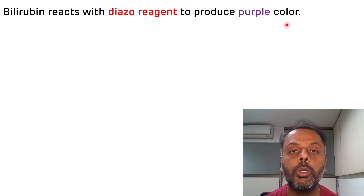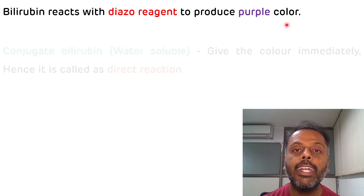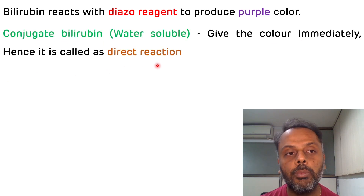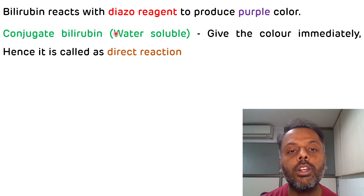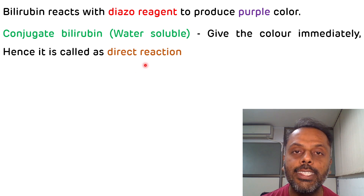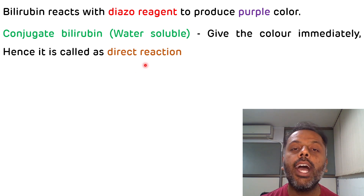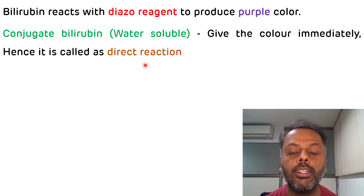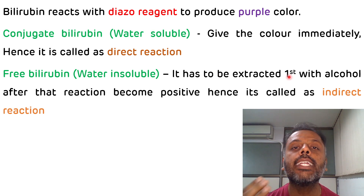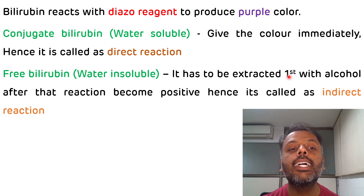When conjugated bilirubin is present in the blood, it gives color immediately. Hence it is called a direct reaction, because conjugated bilirubin is water soluble. For this reason, conjugated bilirubin is also known as direct bilirubin. When unconjugated bilirubin is present in the serum, being water insoluble, it has to be extracted first with alcohol, and after that the reaction becomes positive. Hence it is called an indirect reaction or indirect positive.